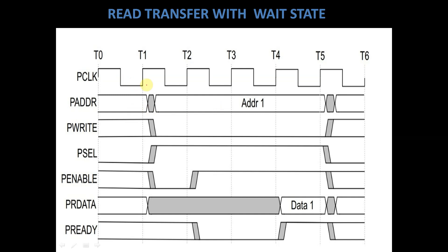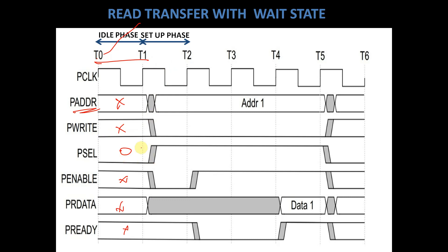Similarly, read transfer with wait state is also the same as write transfer with wait state. During clock cycle T0 to T1, which is an idle phase, PSelect is equal to 0, so PAddress, PWrite, PEnable, PRdata, and PReady are all unknown. During clock cycle T1 to T2, which is a setup phase, PSelect gets asserted to 1, we are getting some address, PWrite is equal to 0 indicating a read transfer, PEnable is still low indicating no transfer, and PReady is still unknown.